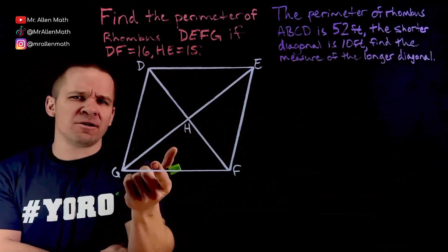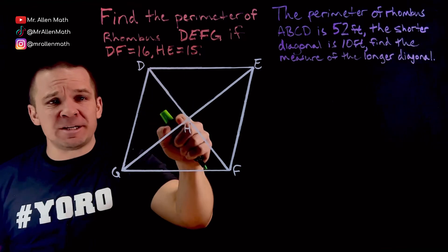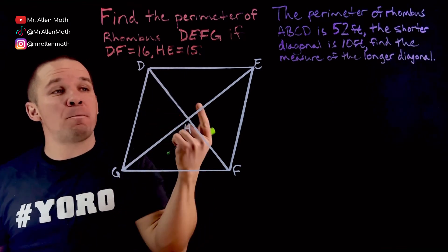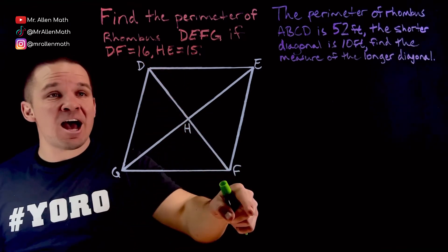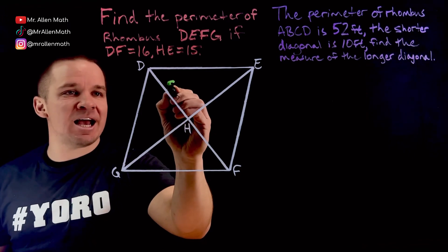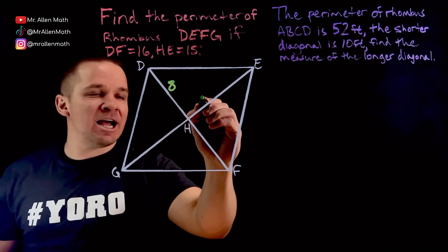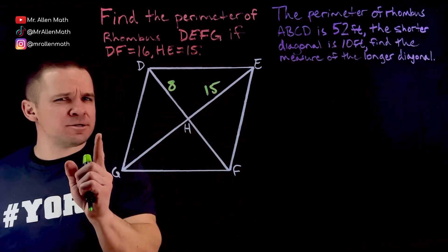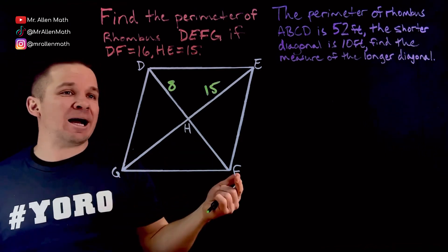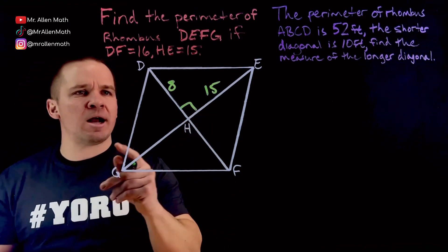Well what do we know about our diagonals of a rhombus? They are perpendicular to each other and they also bisect each other. So if DF is 16 that makes DH right here 8 and HE is 15. I also said they are perpendicular bisectors. So this guy here is a right angle.